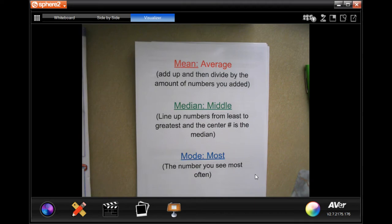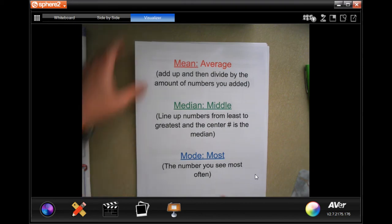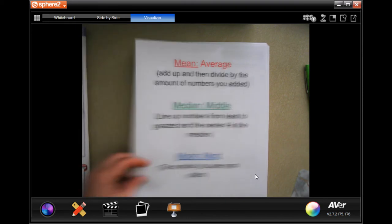Mode is the number you see most often. So if I give you 2, 3, 4, 3, 4, 3, then your 3 would be your mode because you have 3 of them, where you only have either 1 or 2 of the other. We'll get that a little bit more as we go through.